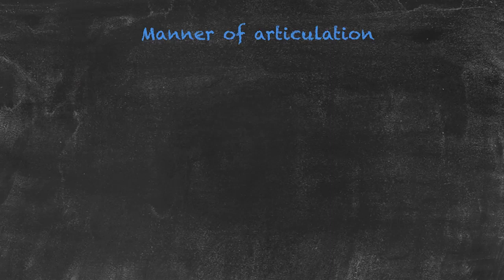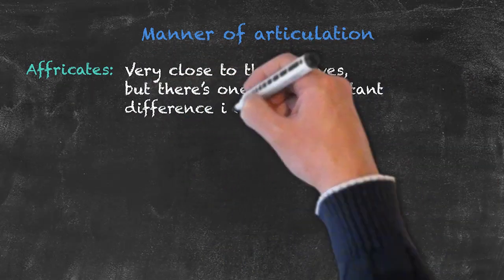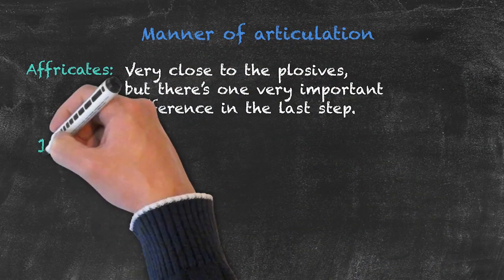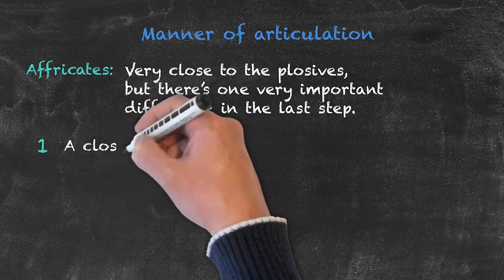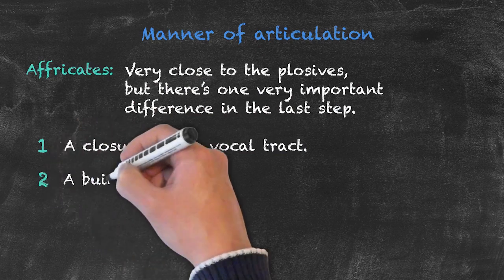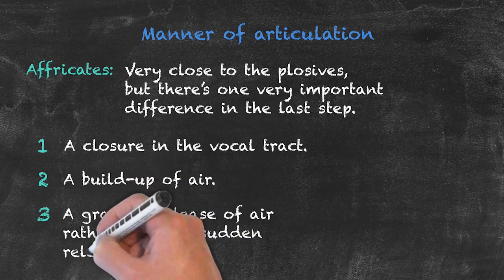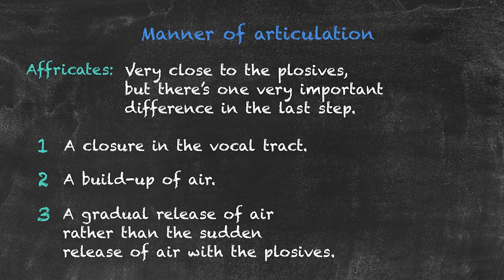Next, we have our affricates. This manner of articulation is very, very close to the plosives. However, there's one very important difference, and that's in the last step. Again, with the affricates, we have a closure somewhere in the vocal tract and a buildup of air. However, with this manner of articulation, we have a gradual release of air, rather than the sudden release of air with the plosives. There are two examples of these sounds, and they are ch and j.